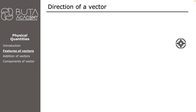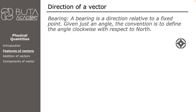The third method of representing a direction is bearing. A bearing is a direction relative to a fixed point. Given just an angle, the convention is to measure the angle clockwise with respect to north. For example, to draw a vector of bearing 62 degrees we measure 62 degrees from north and then draw the vector.